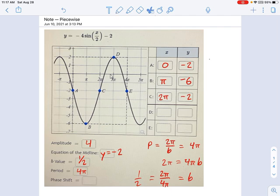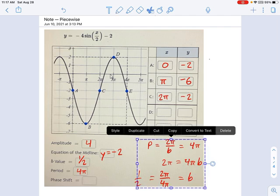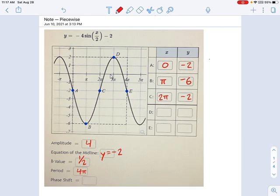But if you were just looking at the equation, b is obvious. b is just the number that's multiplied by x. So if you're looking at an equation, b is easy. If you're looking at a graph, period is easy. And each one of those can lead you to the other one.